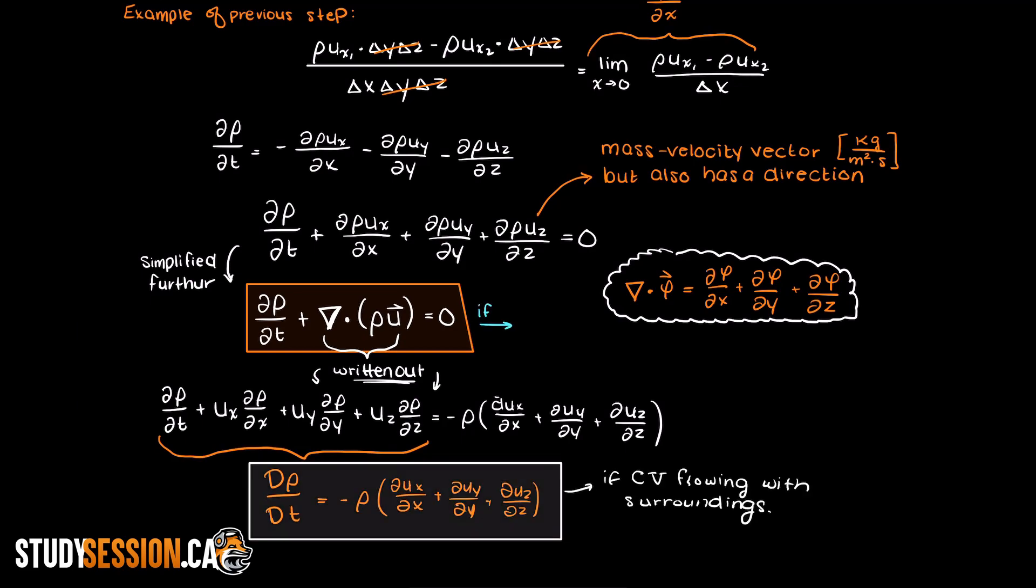If we know that our accumulation term is going to be zero, then the following simplification can be made. This term here will go to zero and nabla mass velocity vector is going to be your only term, which remember we can write out like so. So in summary, we can write out our continuity equation as either of the following, as they are the same thing.